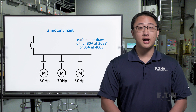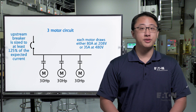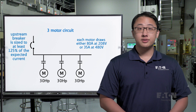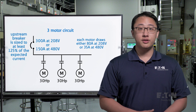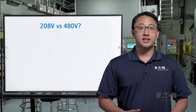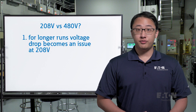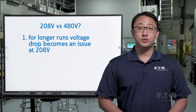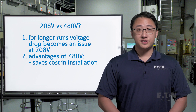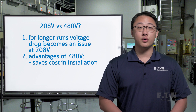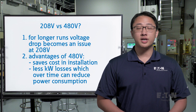Knowing this, we would first size the feeder cables to accommodate the current at the selected voltage for all three motors. In most applications, you would size the upstream breaker to at least 125% of the expected current. Running at 208 volts, the feeder would need to be sized at 300 amps capacity per phase, or if running at 480 volts, about 150 amps per phase. One factor in deciding between 208 or 480 volts is how far away your motors are from the transformer. With a 500-foot run, voltage drop becomes a concern at 208 volts since the higher current results in more losses. Using 480 volts saves money during installation because copper cabling for a 150-amp circuit costs significantly less than for a 300-amp circuit, and there are fewer kilowatt losses, which can reduce power consumption over time.